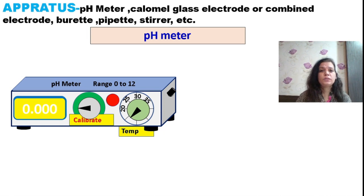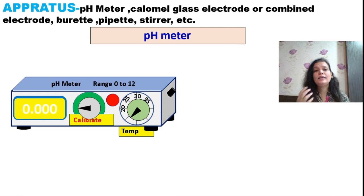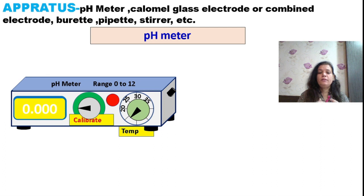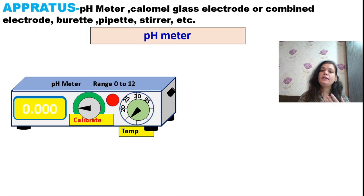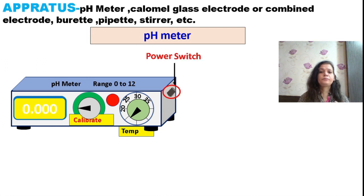For this experiment, we need a pH meter capable of measuring the pH of a solution. The pH meter uses a glass electrode to measure the concentration of H⁺ ions. Other apparatus required includes a burette, pipette, stirrer, and magnetic stirrer with a magnetic needle.